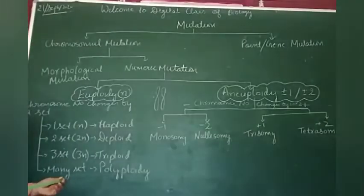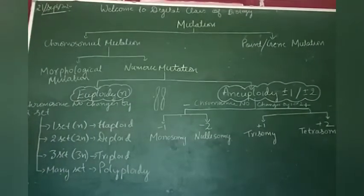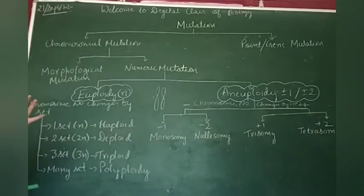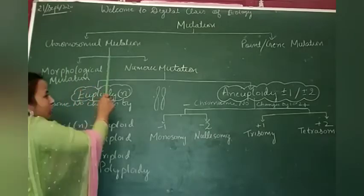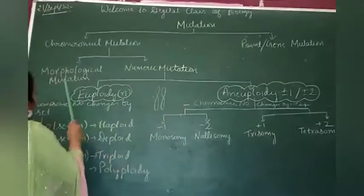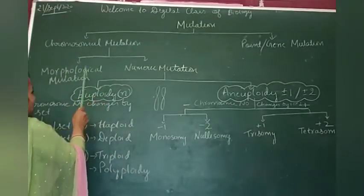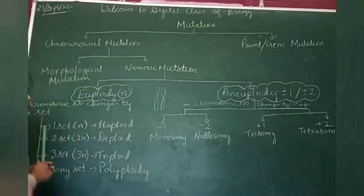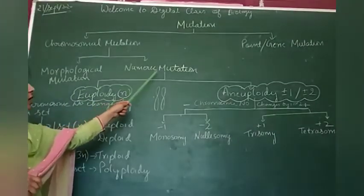I hope you have understood that. After that, we studied that it is of two types: chromosomal mutation and gene mutation. In case of chromosomal mutation, it is of two types: morphological mutation and numeric mutation.